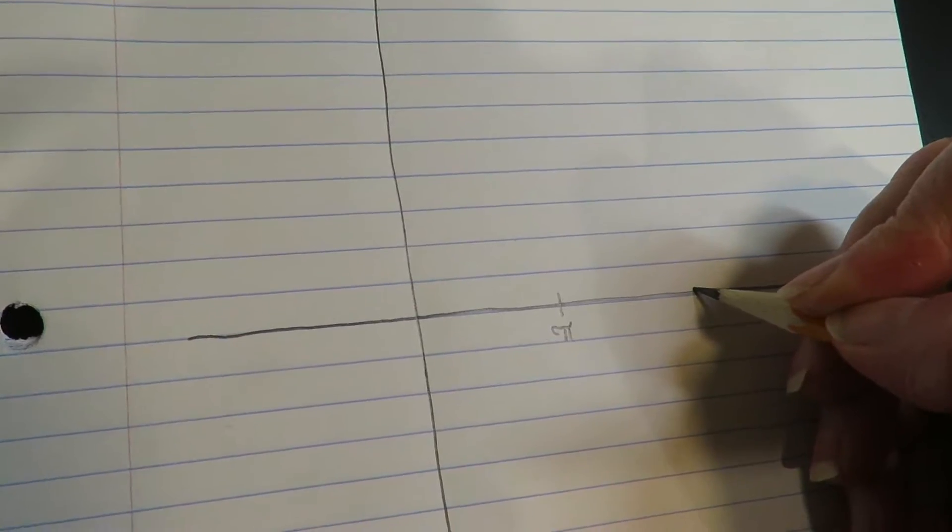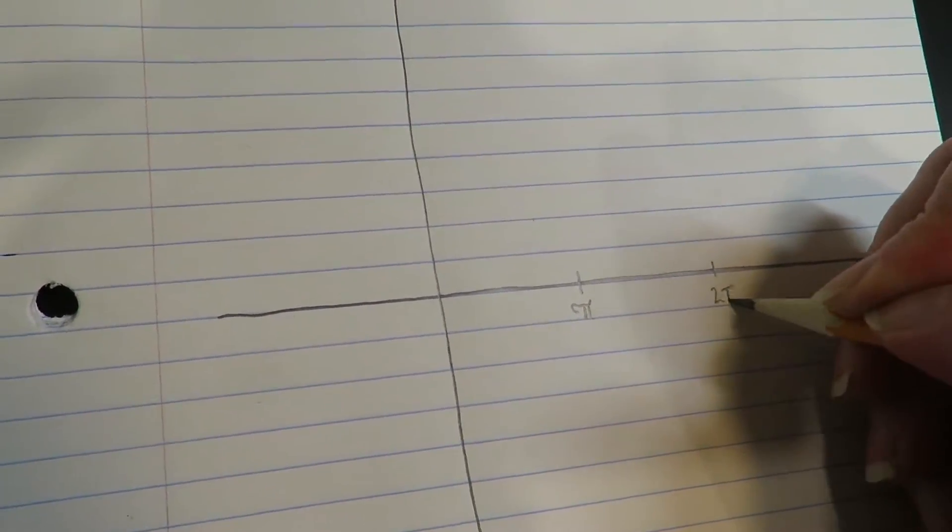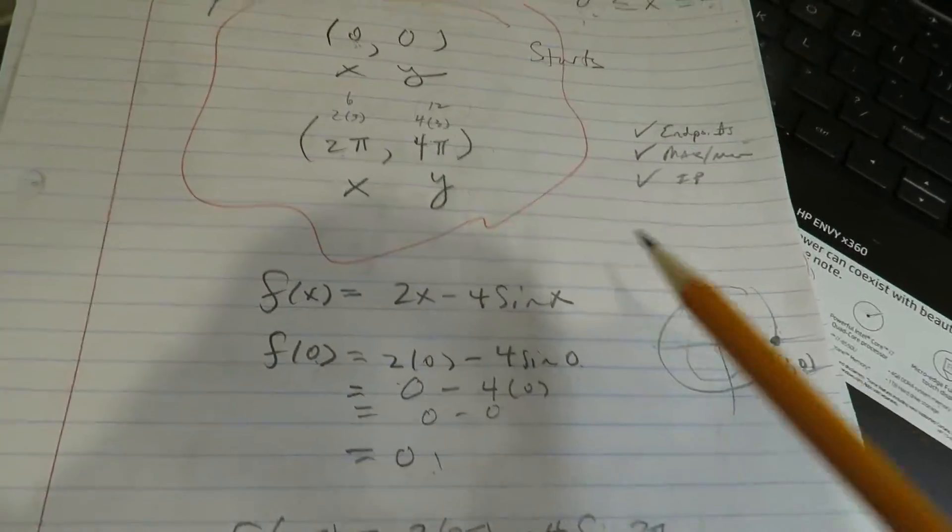So I'll call this π, I'll call this 2π. I'm going to start by putting up the endpoints. So let me just see what they are again. 0, 0, that's an endpoint. And 2π, 4π.